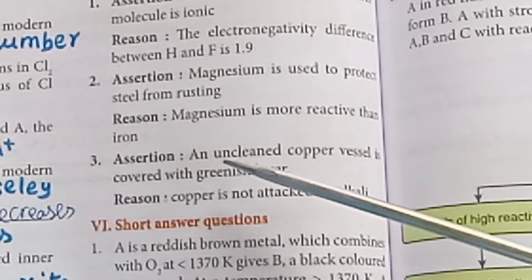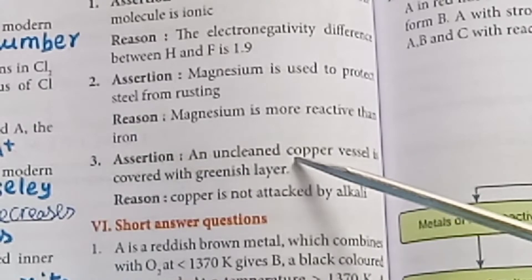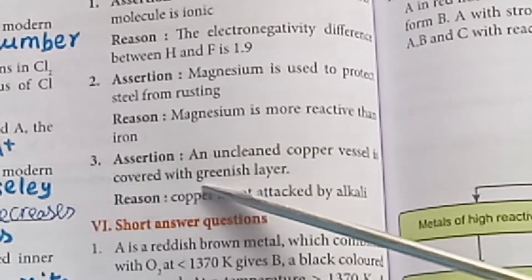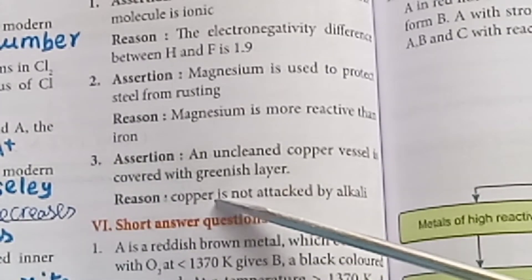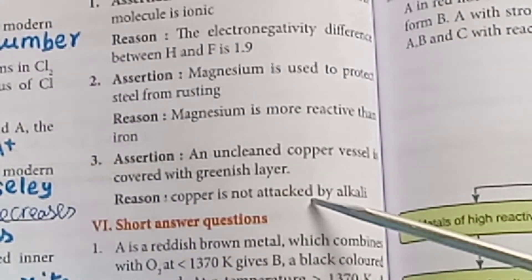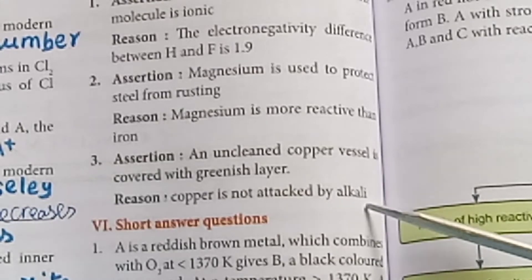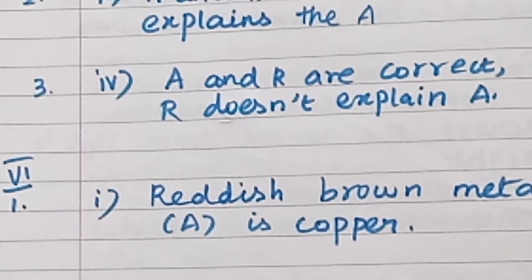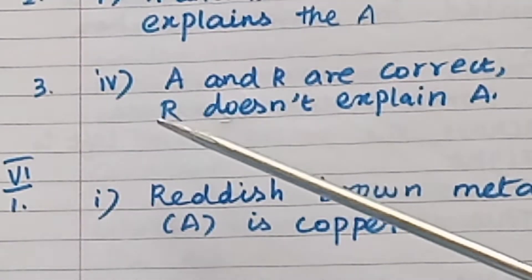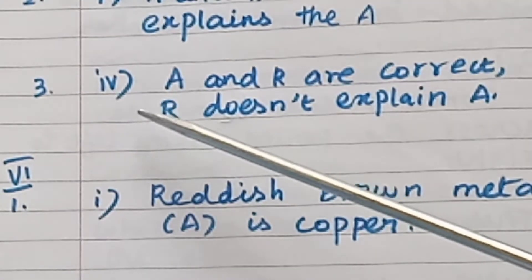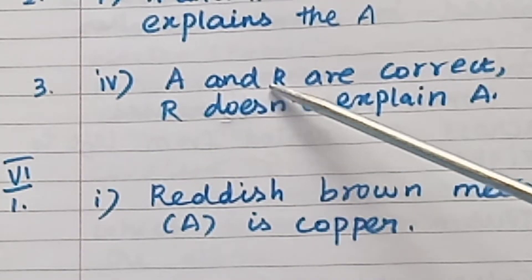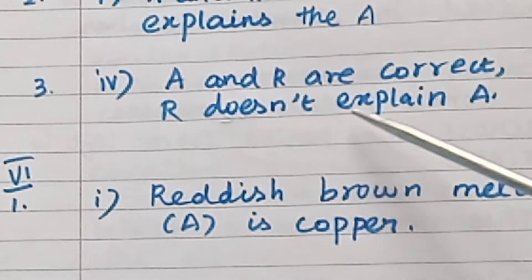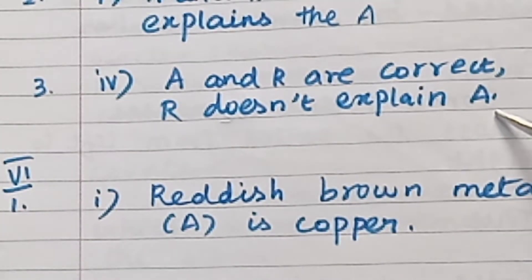Question 3 — Assertion: An unclean copper vessel is covered with a greenish layer. Reason: Copper is not attacked by alkali. Answer: Option 4 — A and R are correct, but R does not explain A.